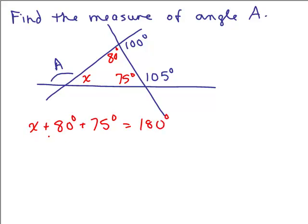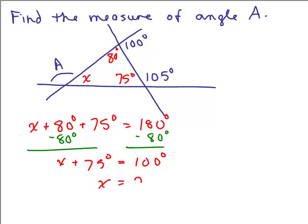We know that we've got, I'm going to make this simple. I'm going to subtract 80 from both sides first. So I get X plus 75 equals 100 degrees so X is 25 degrees.